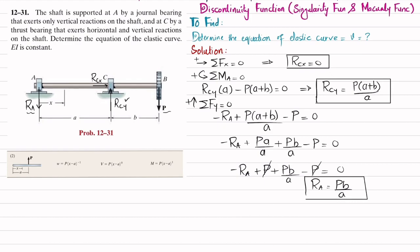Now we have all three reaction forces. We will move toward finding the equation of the elastic curve using: EI · d²v/dx² = M.